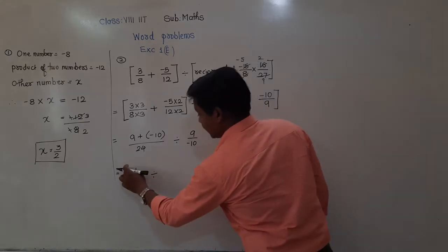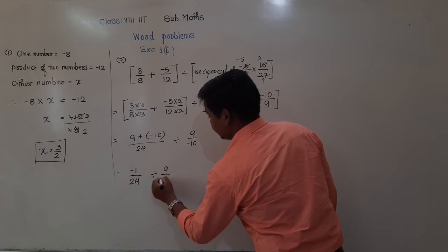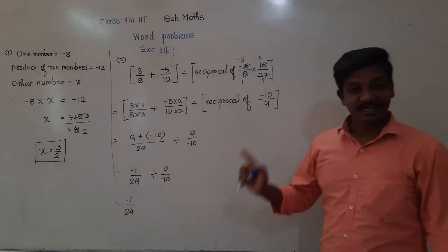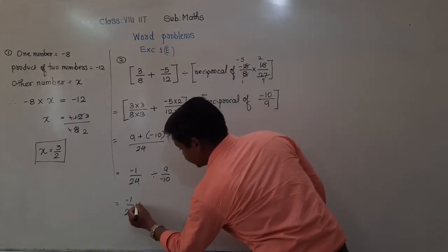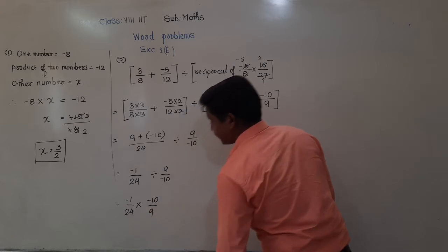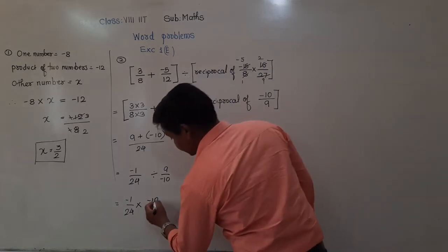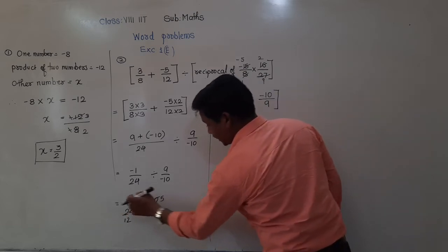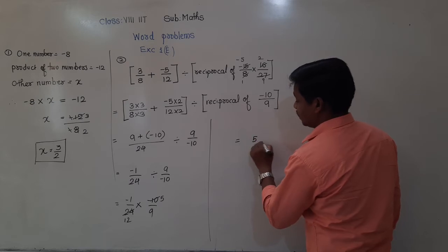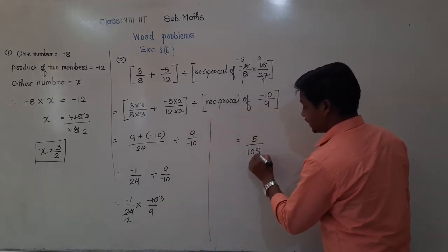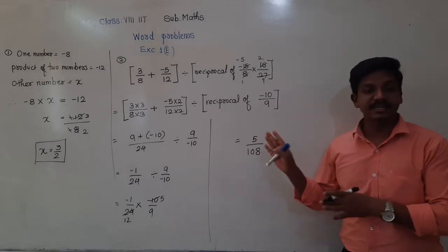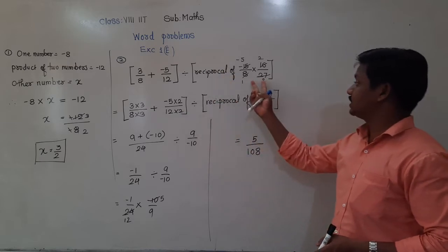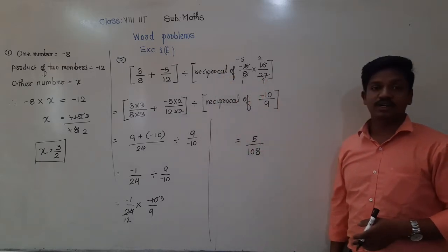Now we have minus 1 upon 24, divided by 9 upon minus 10. Division by any rational number means multiplication by its reciprocal, so instead of dividing by 9 upon minus 10, we multiply by minus 10 upon 9. Minus into minus gives plus, so we get 5 upon 10 as the answer. When we divide the sum of these two rational numbers by the reciprocal of those two rational numbers, we get the answer 5 upon 10.